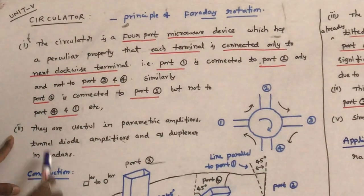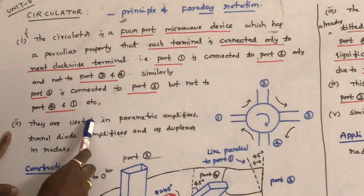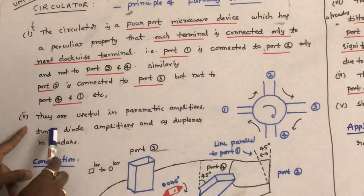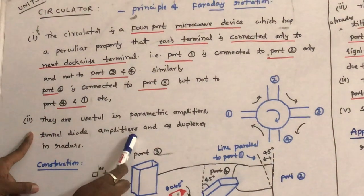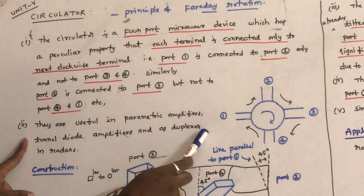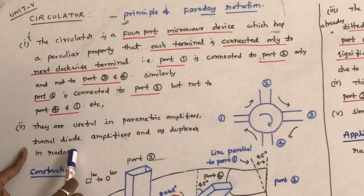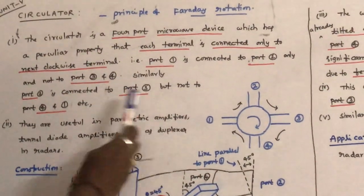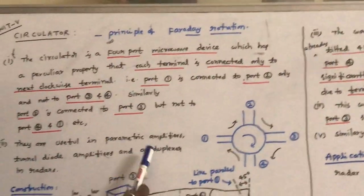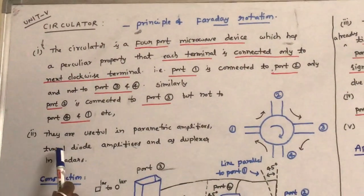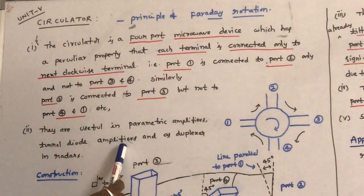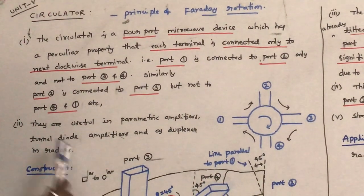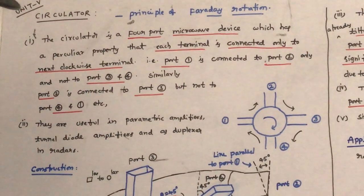These circulators are used in parametric amplifiers, tunnel diode amplifiers, and as a duplexer in radars. These circulators find various applications in microwave circuits such as parametric amplifiers and tunnel diode amplifiers, and are used as a duplexer in radar systems.